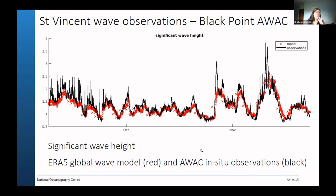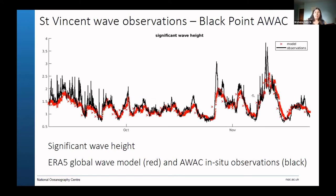This is a time series of the full deployment period - observations from that AWAC are in black and the model in red, showing significant wave height. The model is broadly getting these events coming through - typical wave heights of between one and two metres, with the pattern well represented. But looking at the details where the model's not getting it right, it's missing some of the larger peaks - high wave events of up to three or even four metres that are observed, the model isn't able to pick up. This is the global model - the coarse one - and downscaling does improve the quality of the forecast.